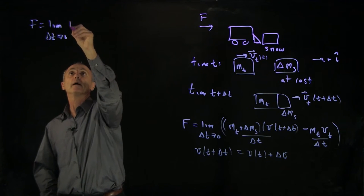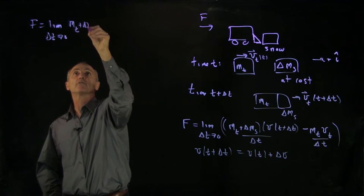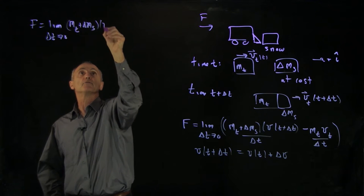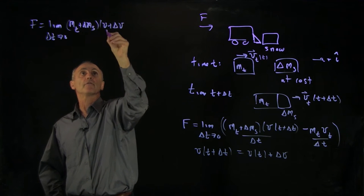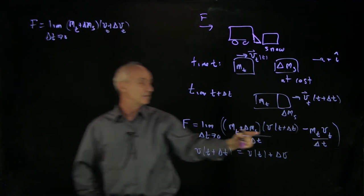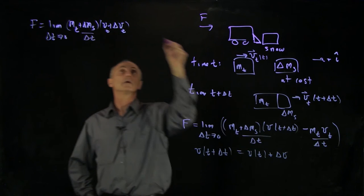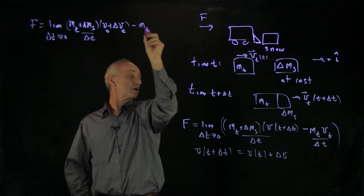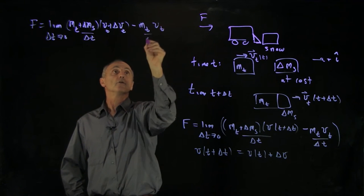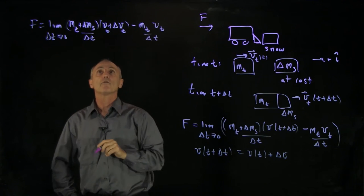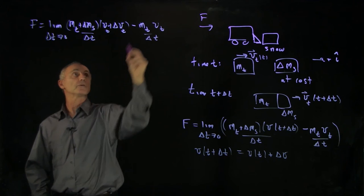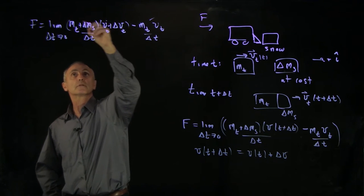We have mt plus delta ms times v plus delta v, the truck. That's the first term, divided by delta t. And the second term is just minus mass of the truck, vt over delta t. Well, first off, we see some cancellations between this term and that.